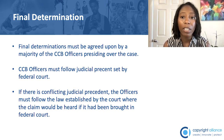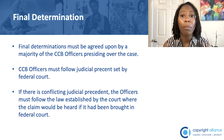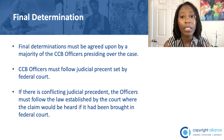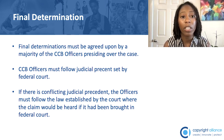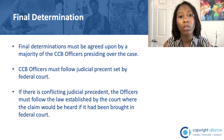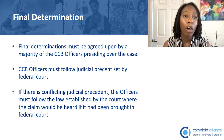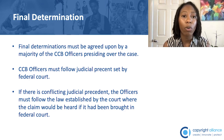Once the board has all of the testimony and conducts any hearings that it needs to, how are the cases ultimately decided? CCB officers consider all of the testimony and evidence that was presented to make a determination. Determinations have to be agreed to by a majority of the CCB officers presiding over the case. The officers have to follow existing judicial precedent from federal court, meaning that they are to resolve matters in the same way that a federal court judge would resolve the issue. In the rare instance where there might be conflicting precedent, the officers must follow the law established by the court where the claim could have been heard if it had been brought in federal court.